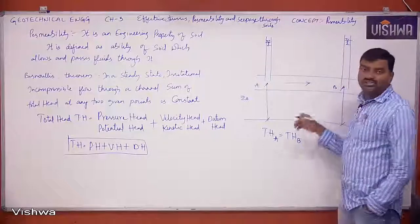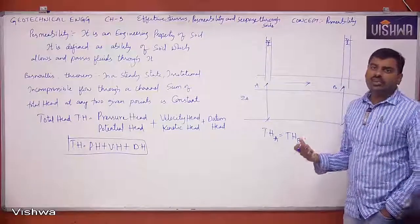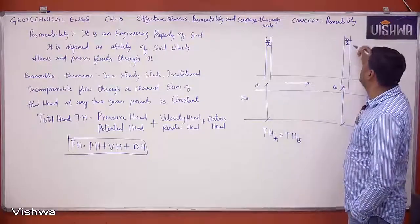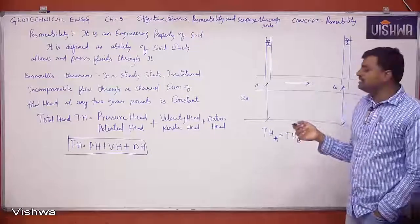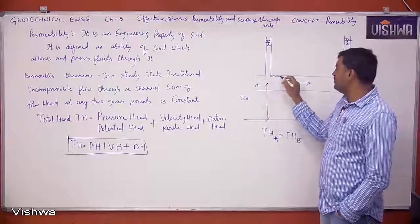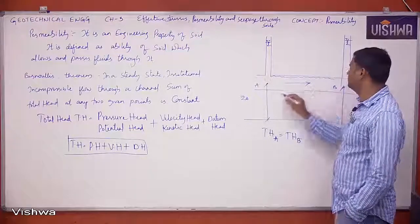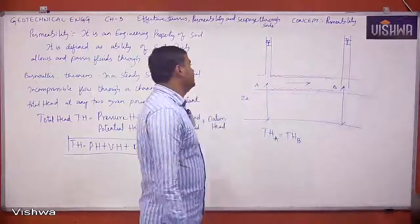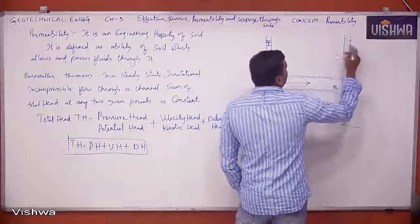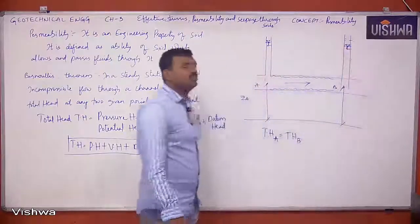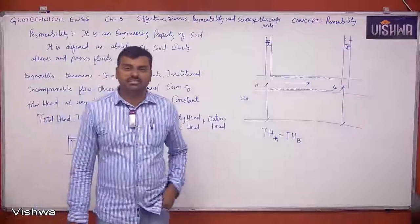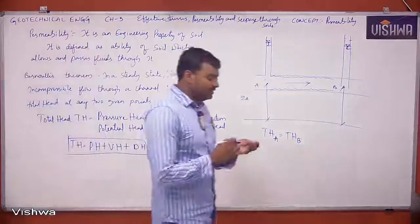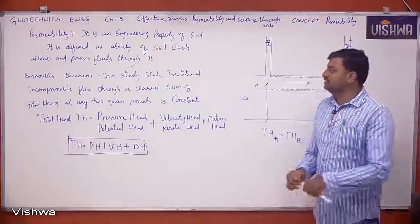In practice, losses occur as water flows through a conduit or channel. Due to friction losses (major losses), the pressure head may drop. Therefore, the same head causing flow at point A may not be seen at point B.